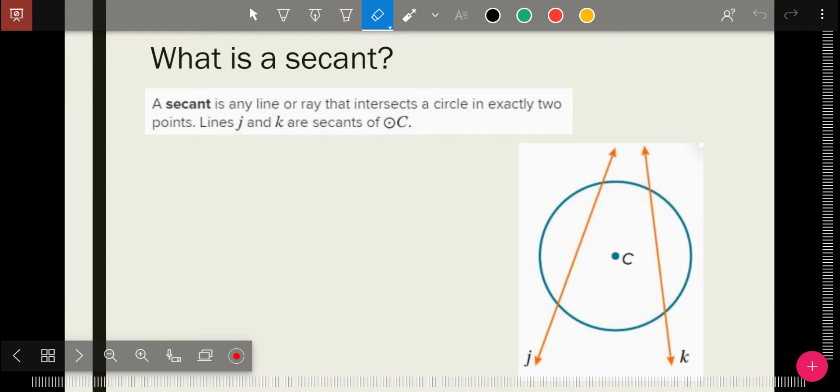We've got to start with the new vocabulary of the day. What is a secant? If you remember, chord was any line that started and stopped on a circle, so it hit the circle twice but started and ended there.